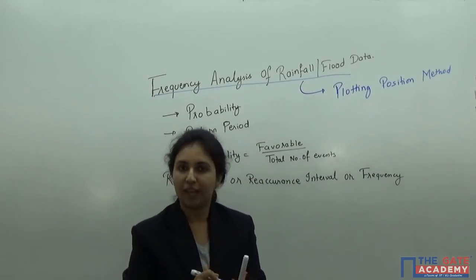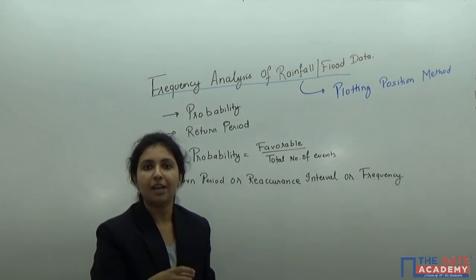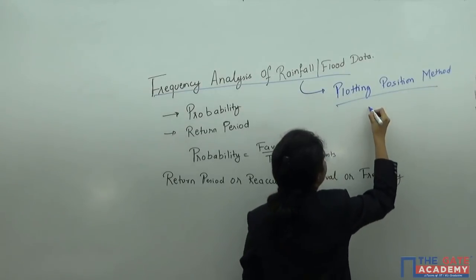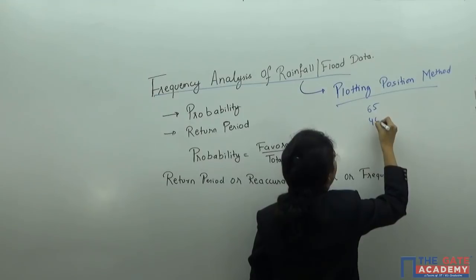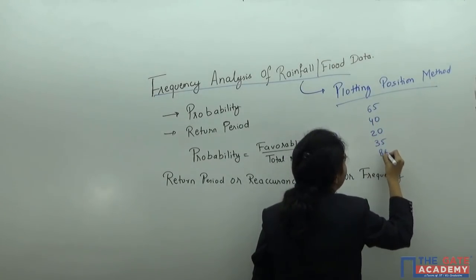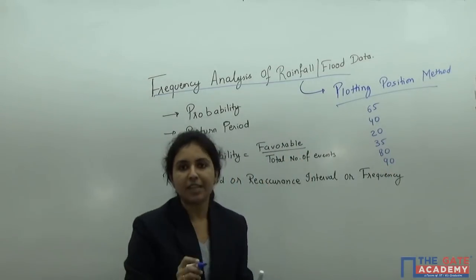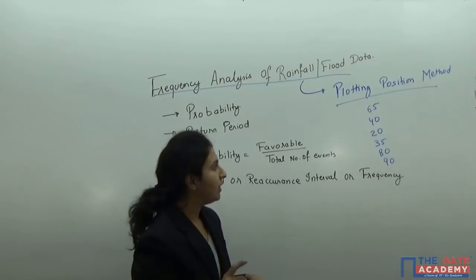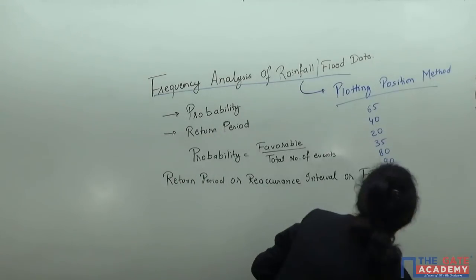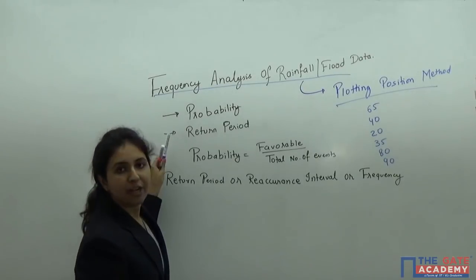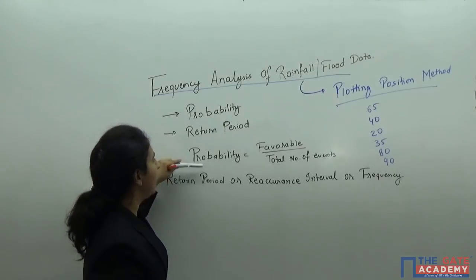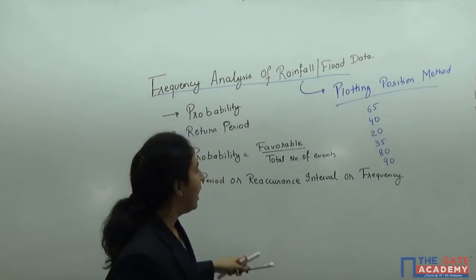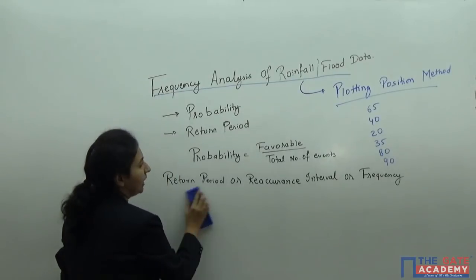In plotting position method, first we collect the data, then we arrange those data in decreasing order, and then we assign rank to them. We will be dealing with only probability and return period. Probability is calculated as favorable divided by total number of events. The frequency analysis is done by the plotting position method, from which I will tell you how to calculate the return period or reoccurrence interval.